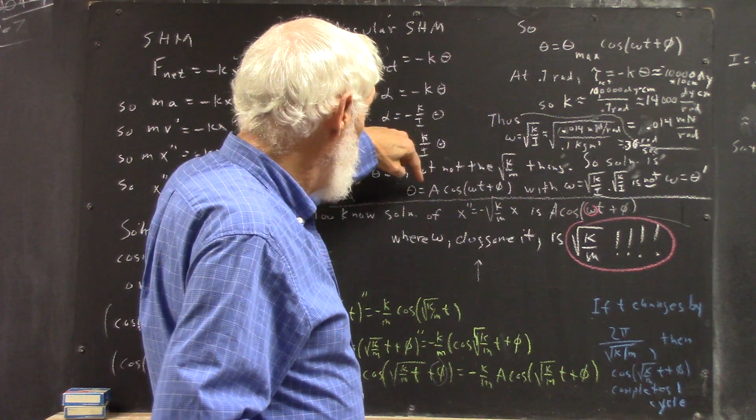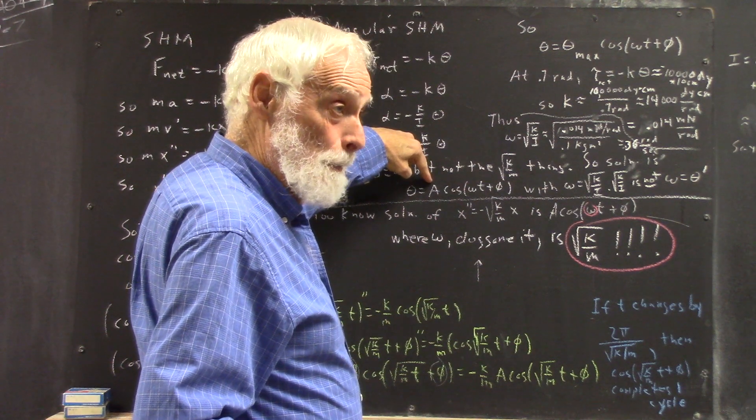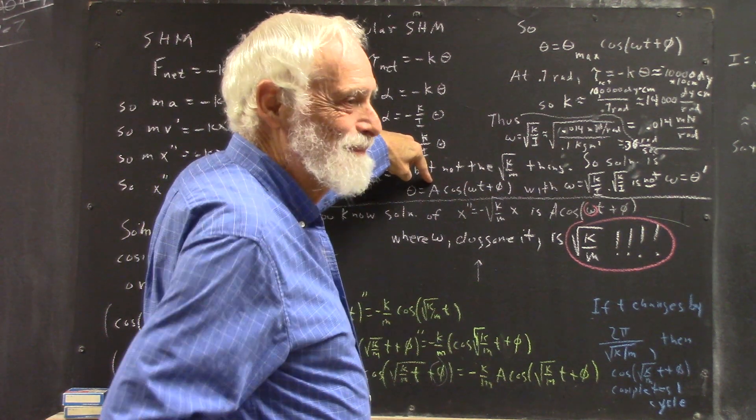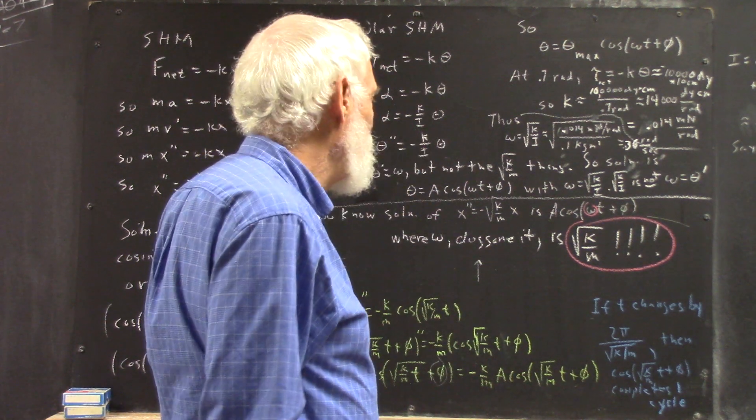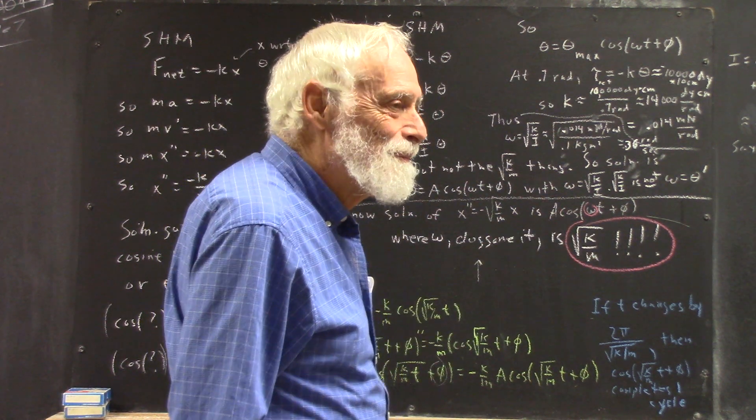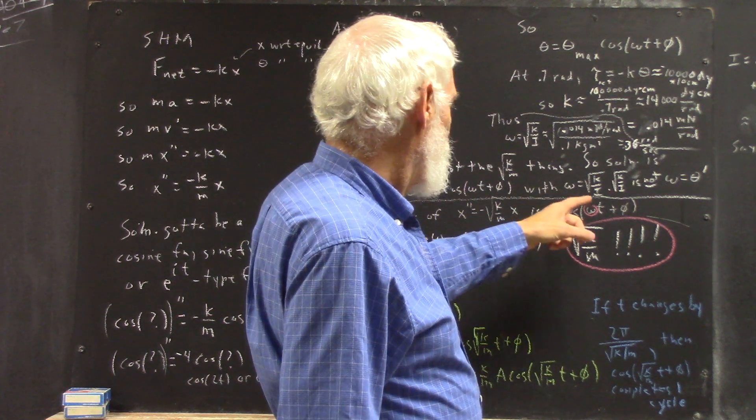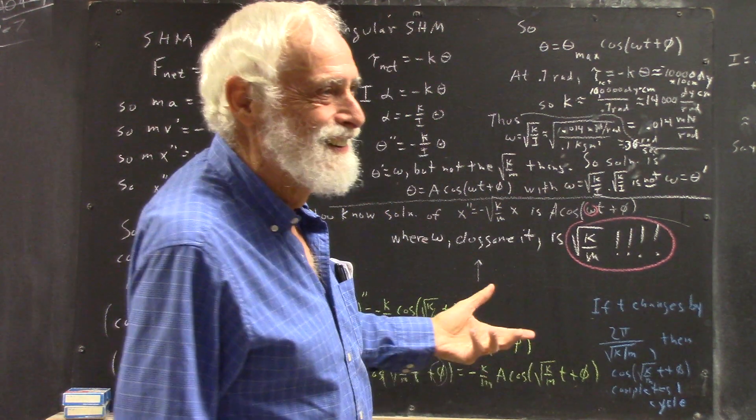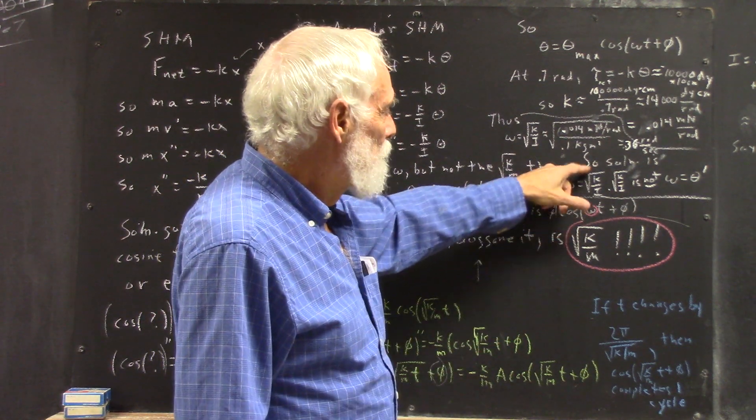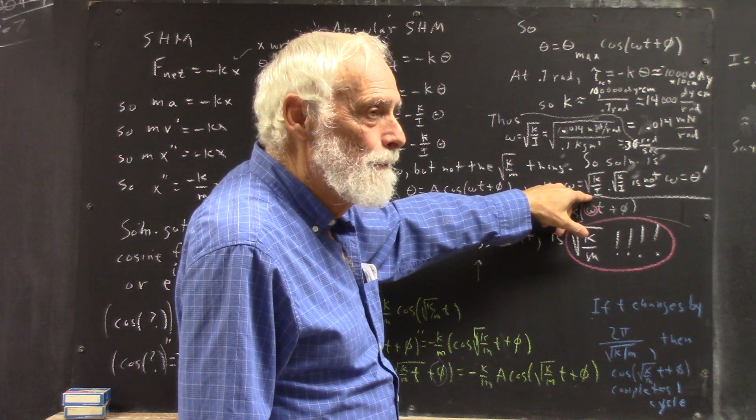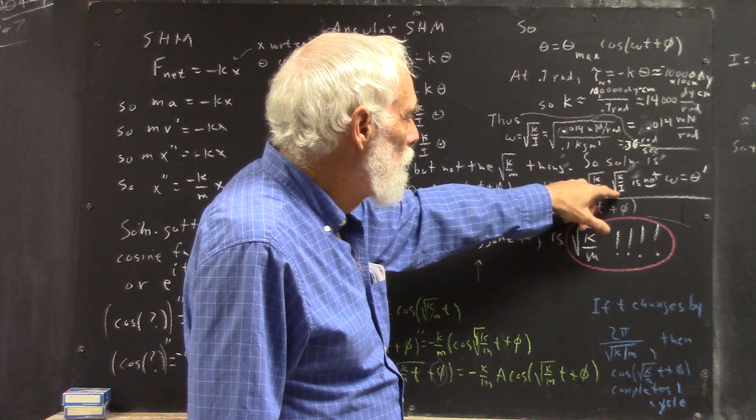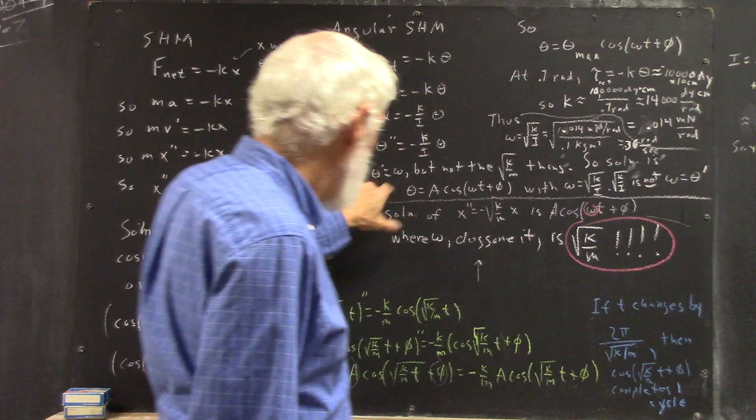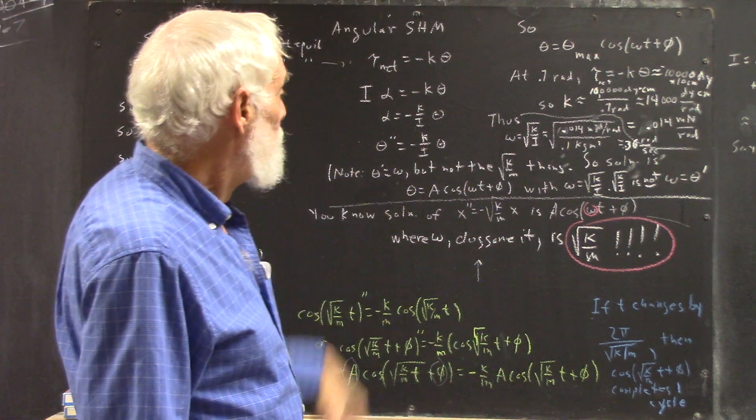Now your book uses a big old fat theta instead of A. I'm going to stay with A. There are too many ambiguous symbols. And anybody who wants to disagree with me, I agree with them. Omega is square root of k over I, but the square root of k over I is not the Omega that's theta prime. There's where the knot belonged. I had an extraneous knot there.